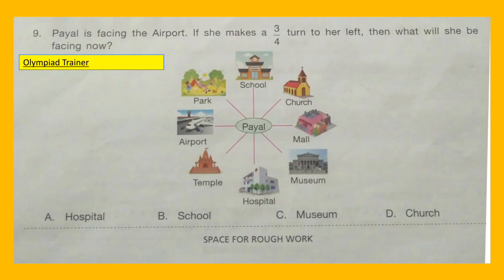Question 9: Payal is facing the airport. If she makes a 3/4 turn to her left, then what will she be facing now? A: Hospital, B: School, C: Museum, D: Church.